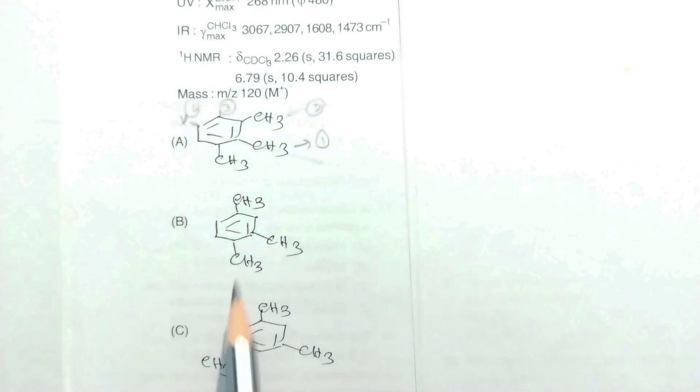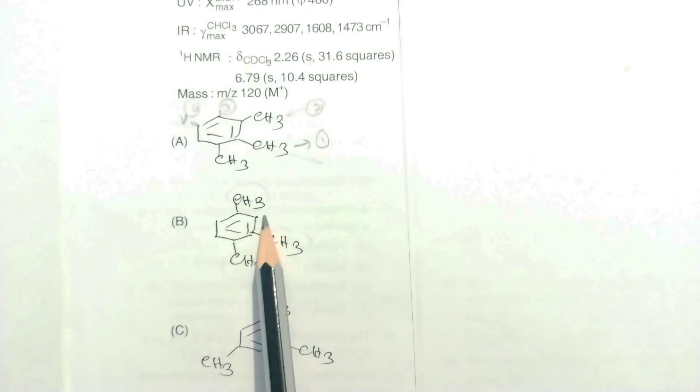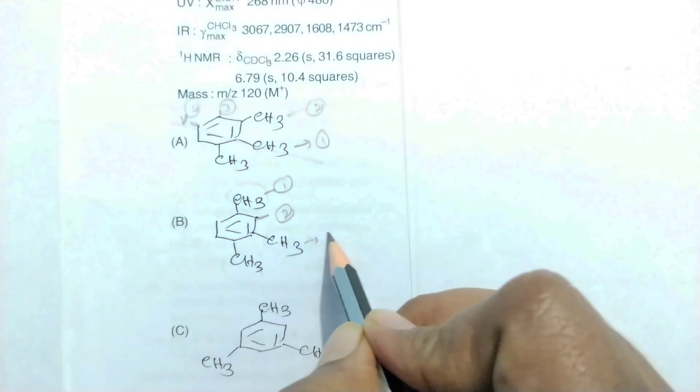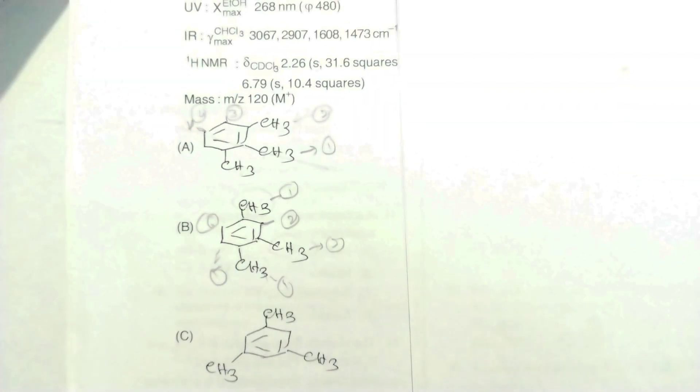But the data shows only two signals. In structure one there are four different types, and for the second structure you can find six signals. In the third structure, all the CH3 groups are the same — all CH3 hydrogens are chemically equivalent because they share the same chemical environment, giving only one signal.